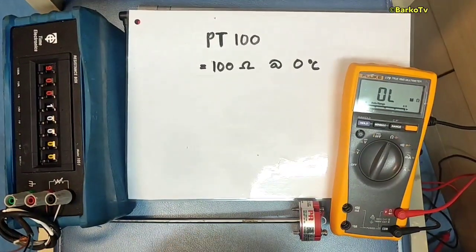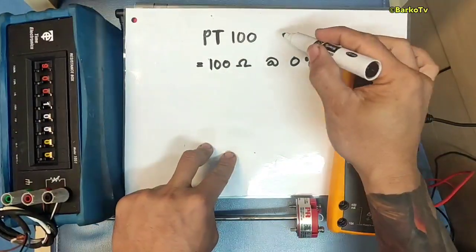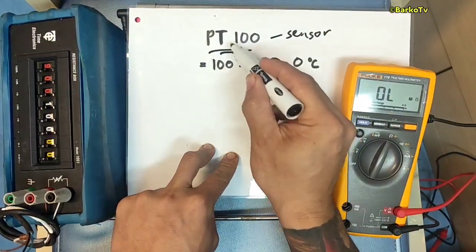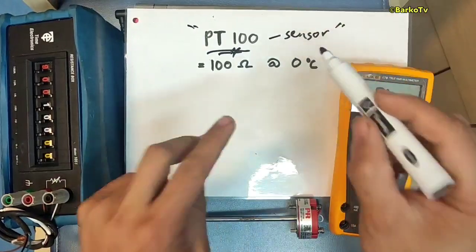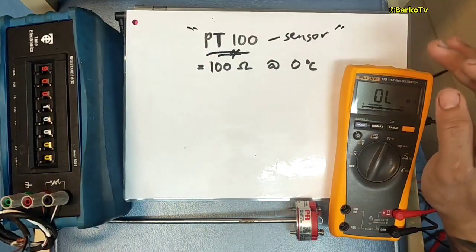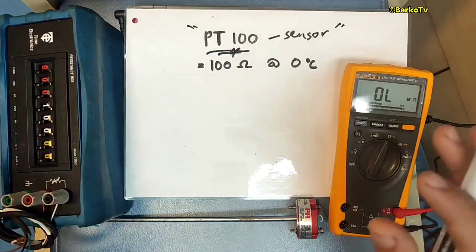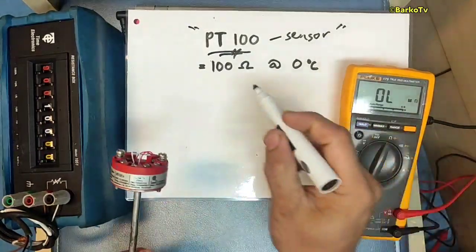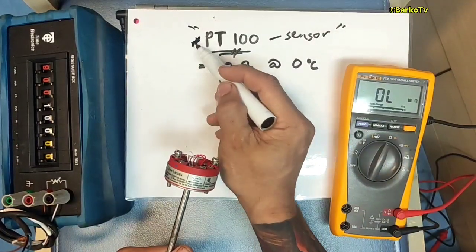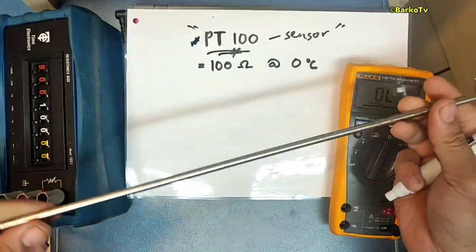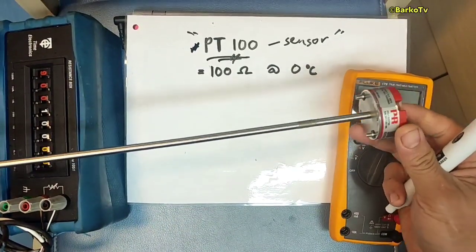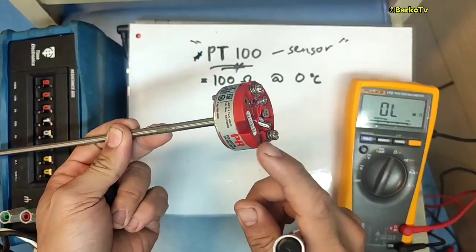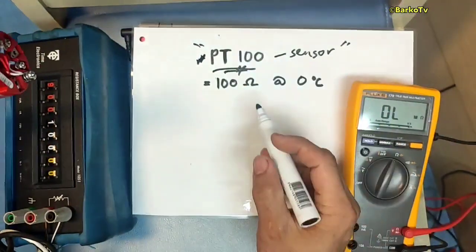Today's topic is the PT100 sensor. This is a common and very important sensor in the ship industry — it's the first sensor you need to know when onboard a ship. This is the PT100 sensor and this is the transmitter.